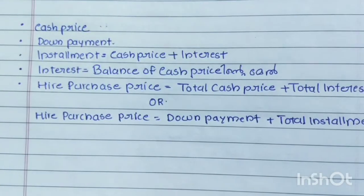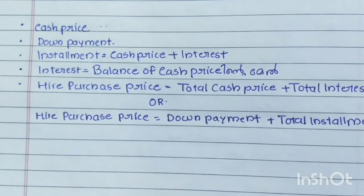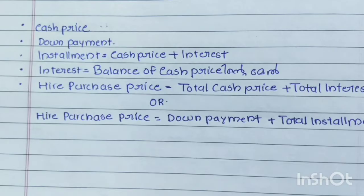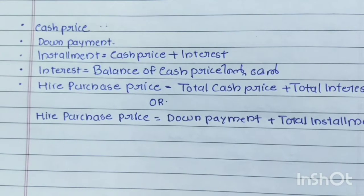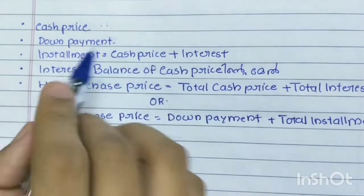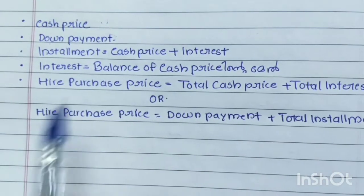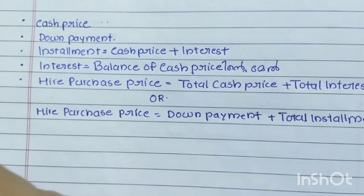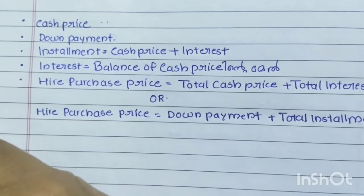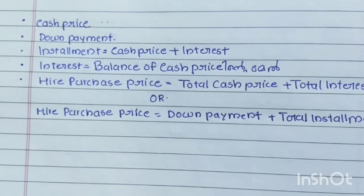Now we have to pay a down payment. The cash price is 10 lakhs. I would like to give 2 lakh rupees as down payment. So this is the cash price, this is the down payment. The remaining balance is 8 lakhs. I am going to get the installment of the cash price.